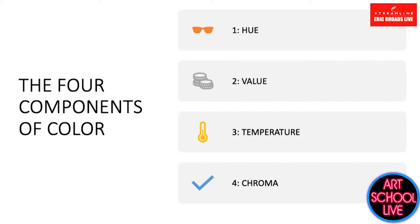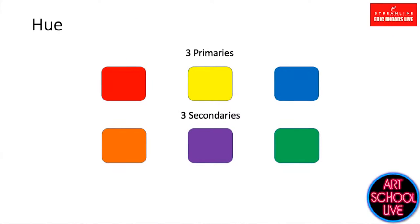You might want to explain what some of those terms mean. Hue is actually the color of the color. There are hue families — three primaries: red, yellow, blue — and three secondaries: orange, purple, and green, plus black and white. When mixing paint, the first thing to consider is what hue family it belongs to — one of those six.